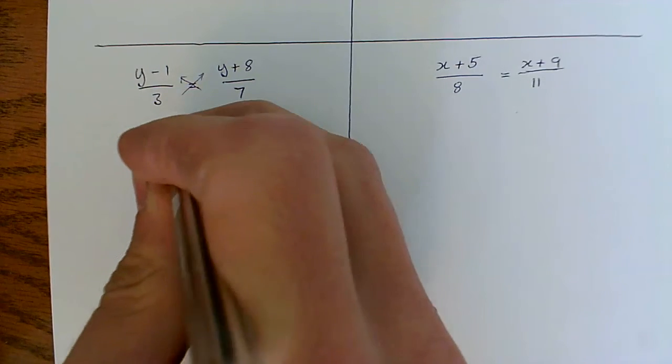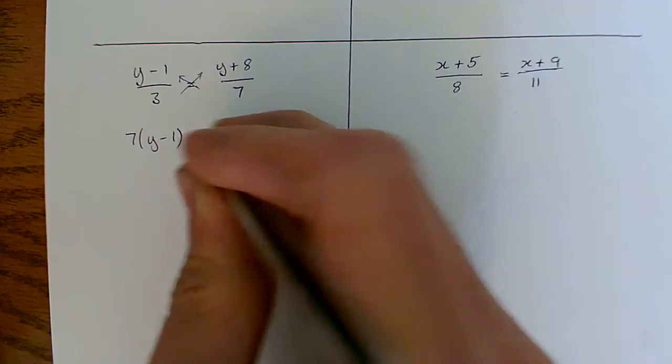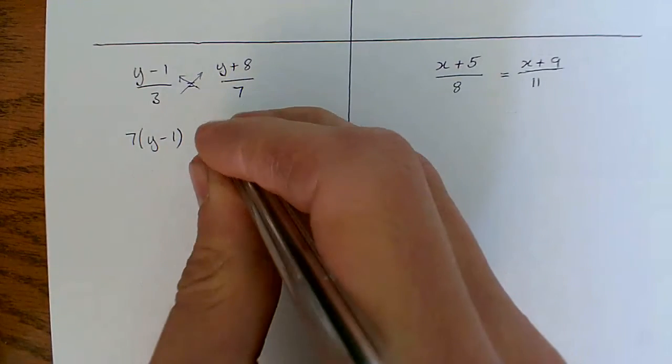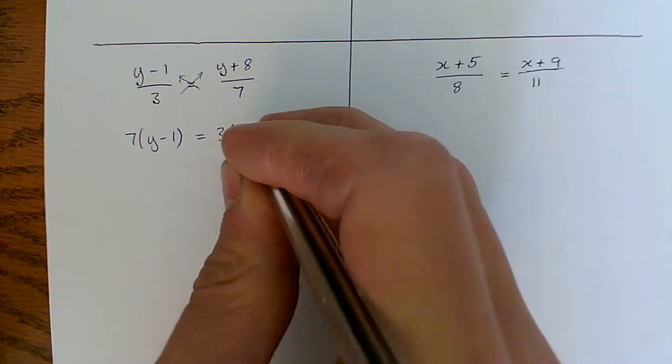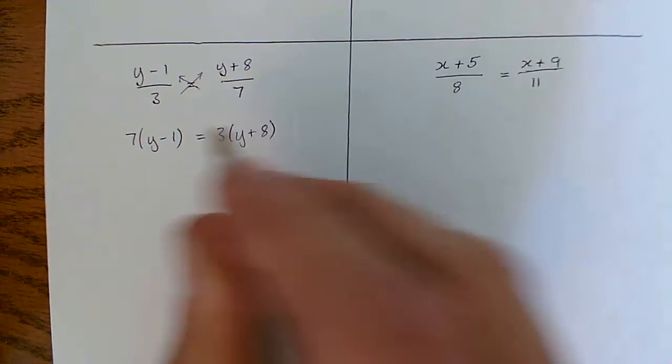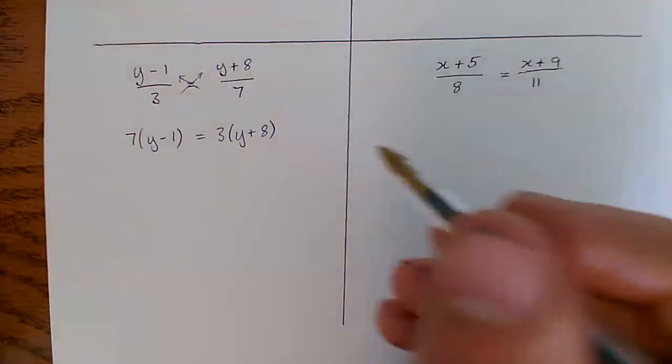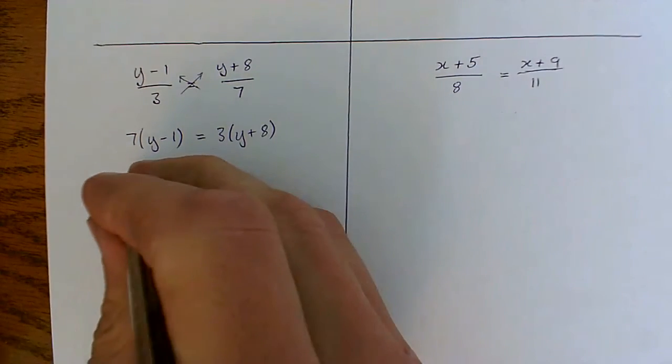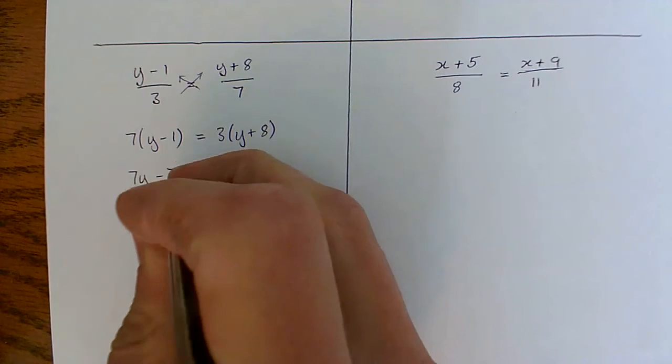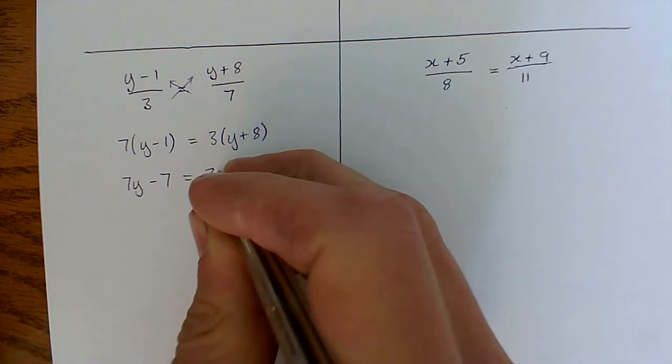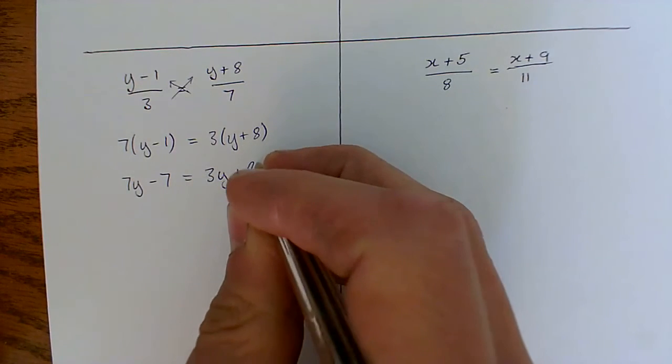But this idea remains the same. We're going to cross multiply. So we're going to do 7 lots of this. And again, I'm using these brackets to really help me out. 3 lots of that means I've only got to keep one thing in mind, which is just which two things am I working with. I don't need to think about multiplying out yet. Now I can do my multiplying out.